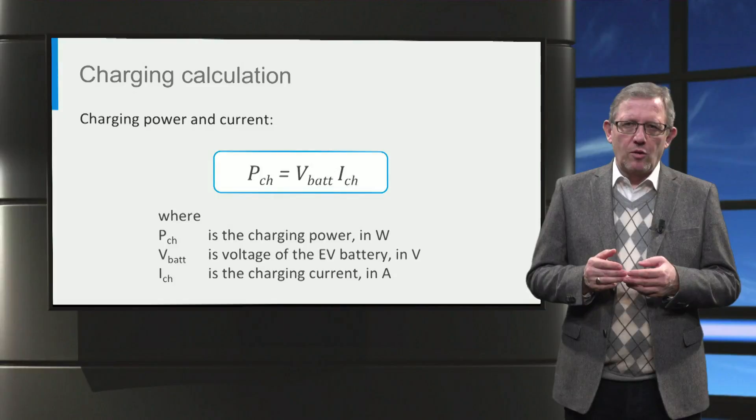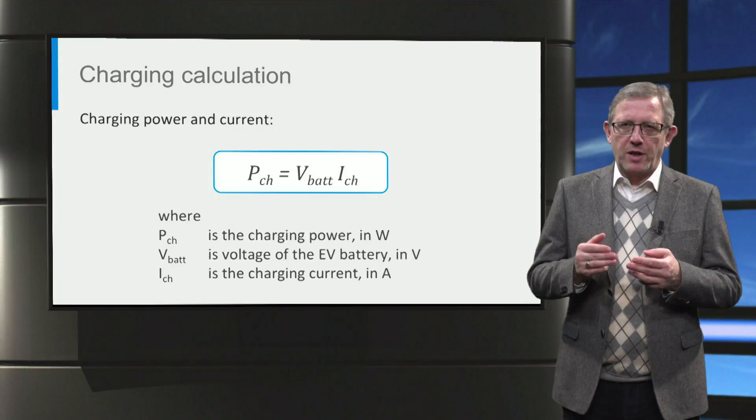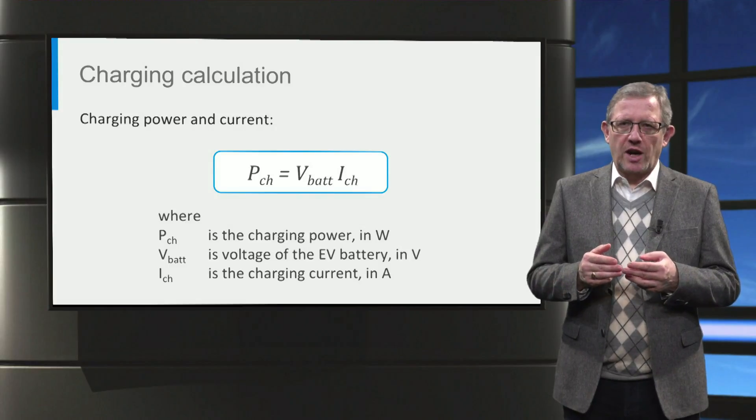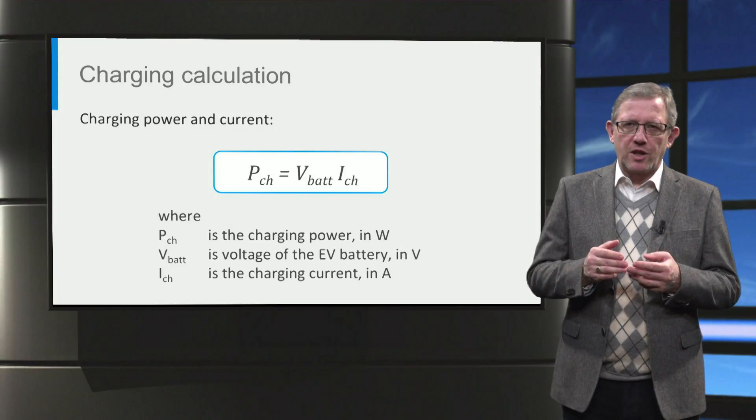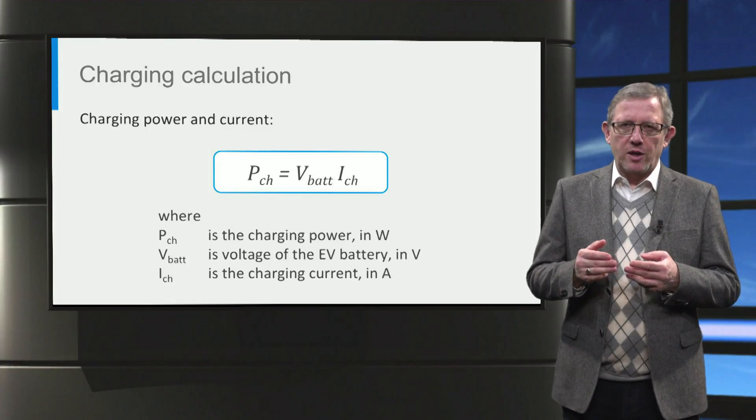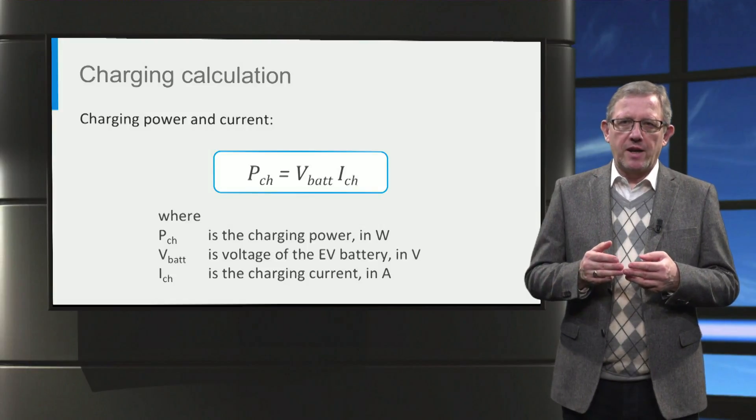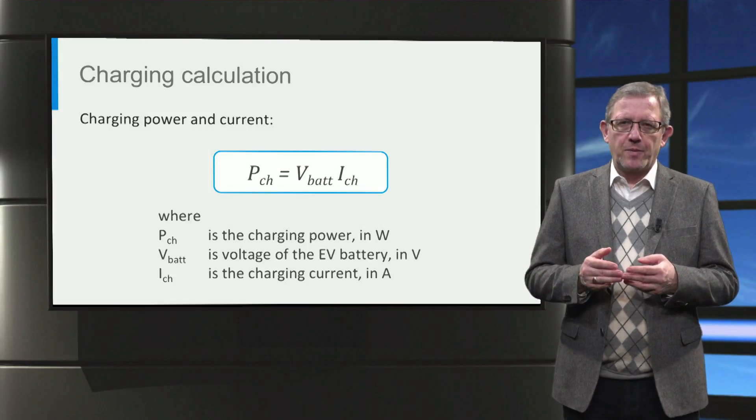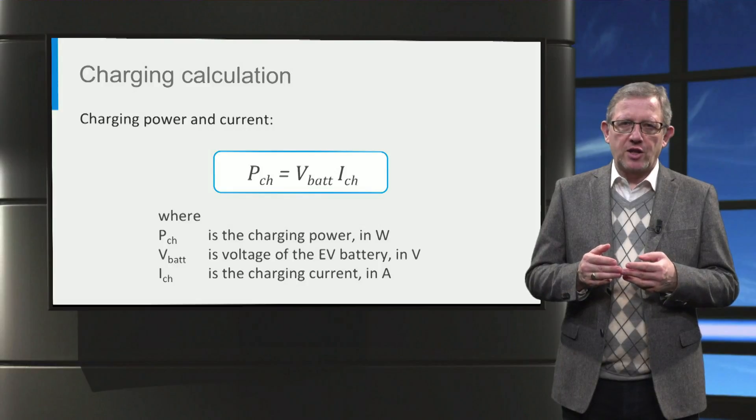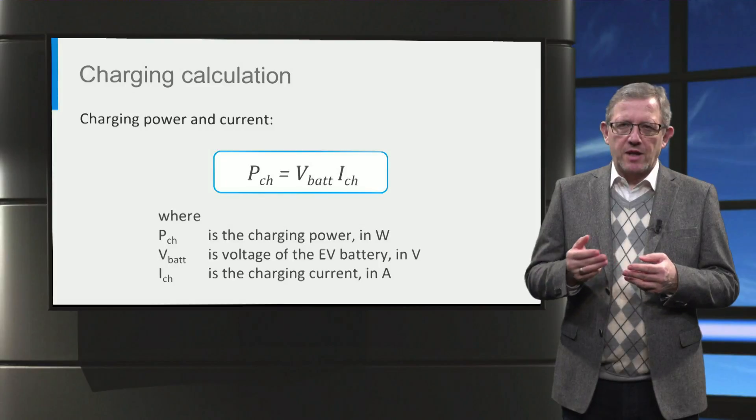Let us now look at a few general equations for charging. First, the charging power, P-charge, is the product of the charging current and the battery voltage, V-bat. A battery is hence charged by controlling the charging current. Therefore, faster charging can be achieved by increasing the charging current. Typical units used for electric vehicle charging power are kilowatts, volts for voltage and amperes for current.